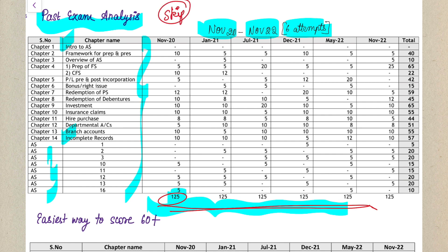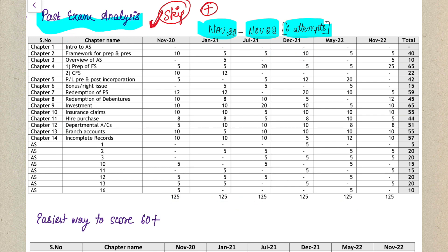This analysis helps you decide whether you can skip any chapter. Toppers go through this analysis and check the weightage given to a chapter in previous attempts. If a chapter has not been given much weightage, you can skip it; otherwise it is very important to cover it. You can take a screenshot of this analysis or I'll provide it in the Telegram group for your reference.